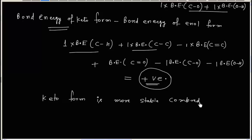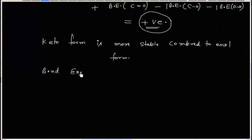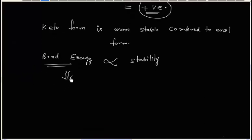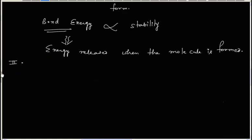Since the difference in bond energies comes out positive, this means the keto form is more stable compared to the enol form, because more bond energy means more energy has been released to the surroundings, meaning the molecule is more stable. Bond energy means energy released when the molecule is formed. So this confirms Rule 1: in case of a monocarbonyl compound, keto form is more stable. The second rule is: in case of a more substituted alkene, enol content increases.